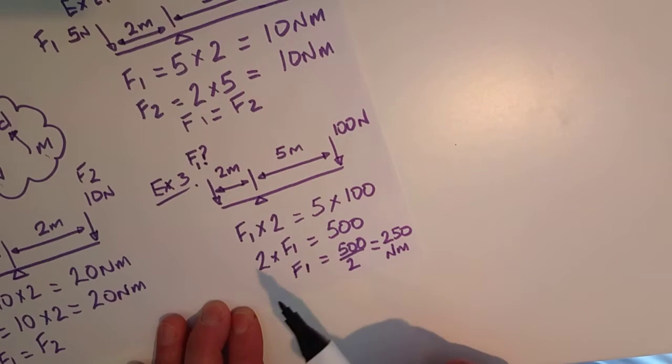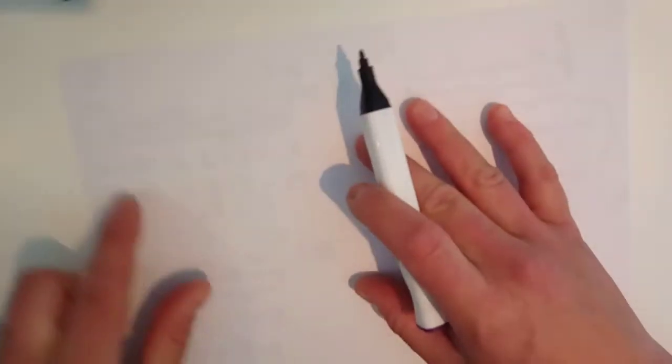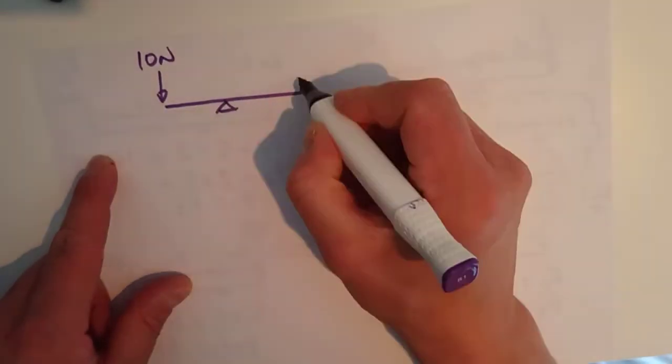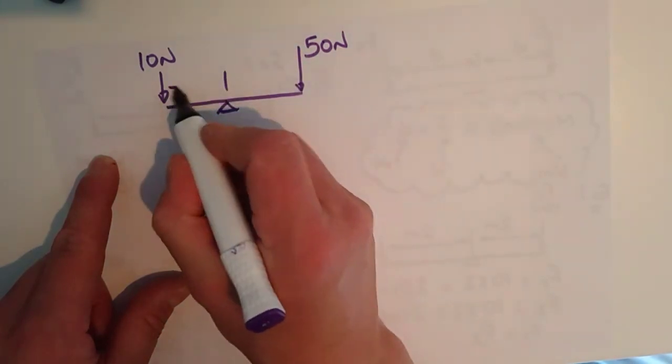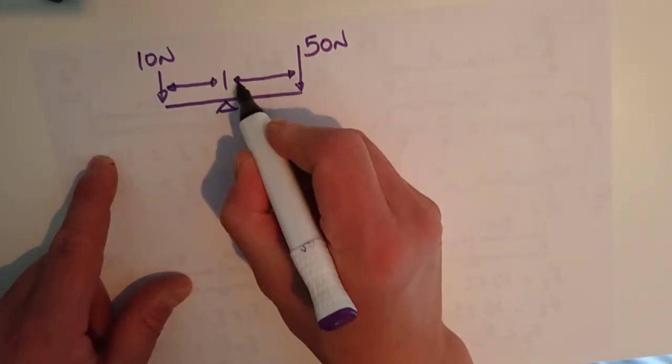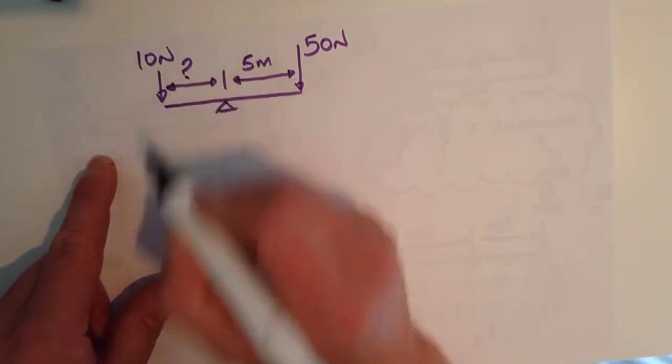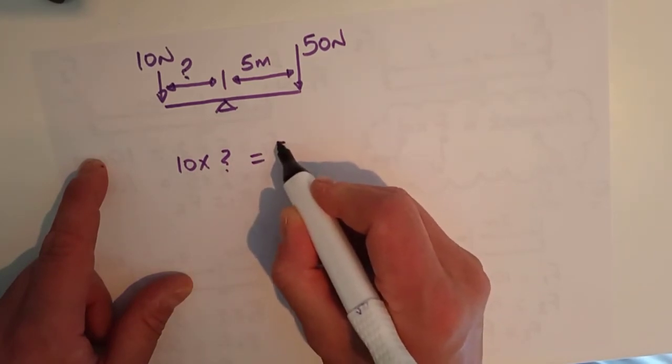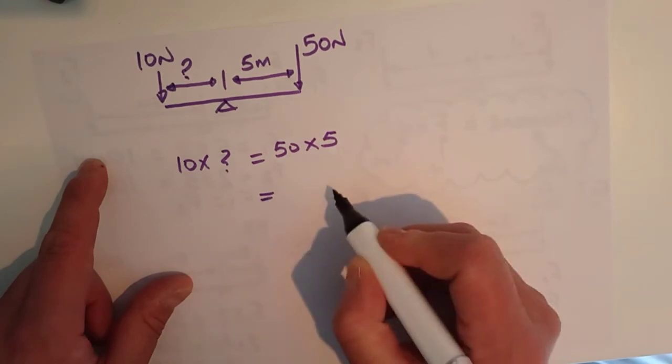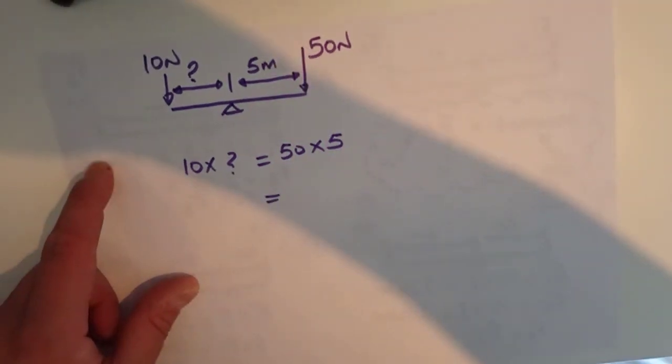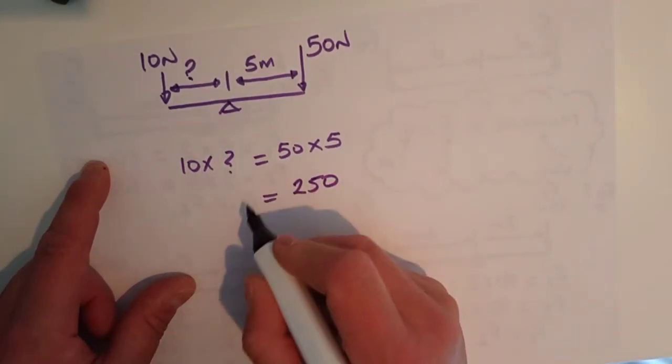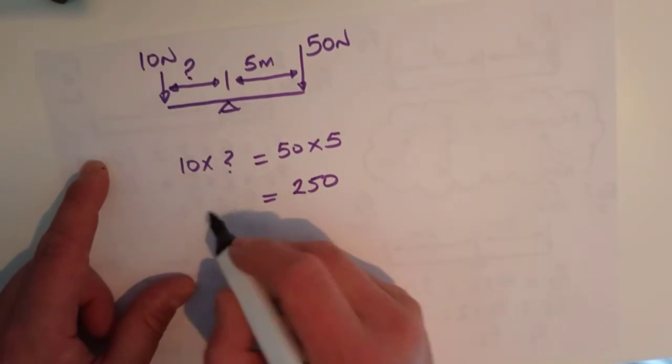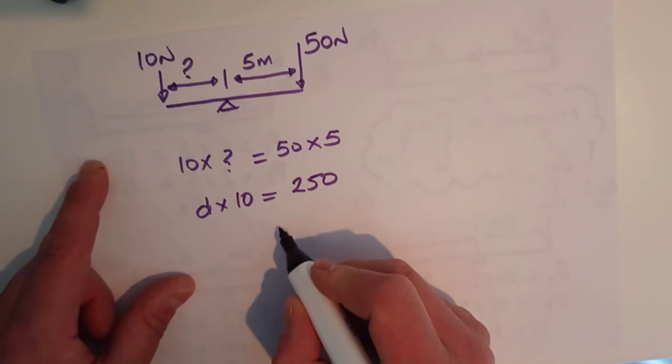And you can do the same with an unknown distance. So again, looking at a beam and this time, what we're going to do is have a force of 10 newtons and a force of say 50 newtons. We'll give this as 5 meters and we'll give that as an unknown distance. So again, 10 times a question mark is equal to 50 times 5, force times distance. So 50 times 5 is 250. So what's this question mark? This is distance really, isn't it? So I should have put that as a d. So now this time again, d times 10 is equal to 250.